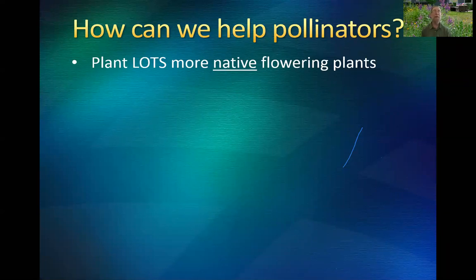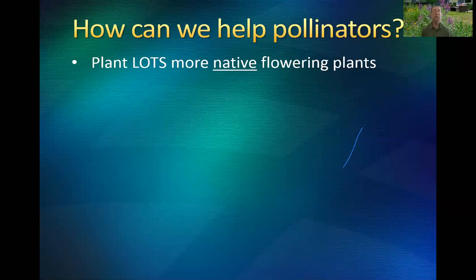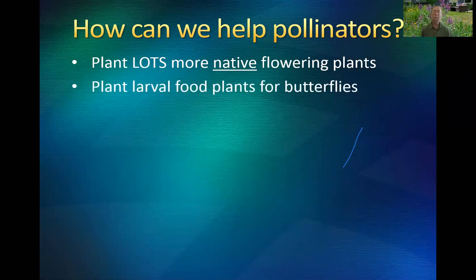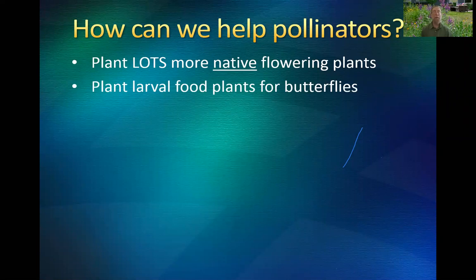Cranberries, for instance — honeybees do a terrible job of pollinating cranberries, but bumblebees do a great job. It's also important, if you want butterflies, to plant the caterpillar food plants for those butterflies. A lot of you have milkweed for that reason. There are plenty of other plants beneficial for other insects — just look at a butterfly guide, flip to the section describing larval food plants, and consider whether you want to have those plants in your yard.